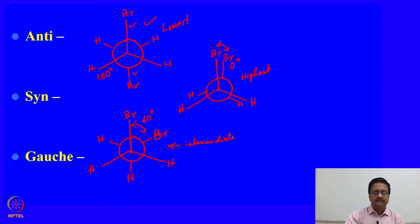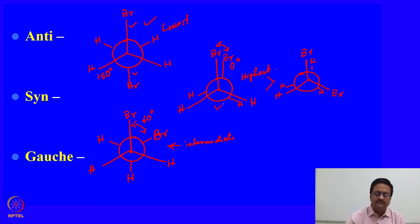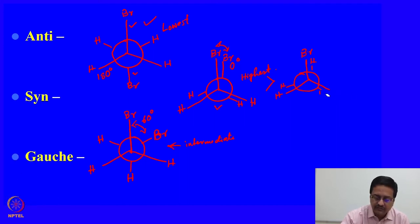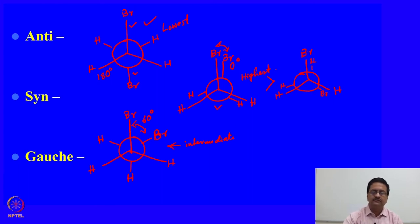There is another syn conformation possible for dibromoethane where bromine and hydrogen are eclipsed instead of the two bromines being eclipsed. This syn conformation has slightly lower energy compared to the fully eclipsed syn conformation, because the bromines are farther apart — there is no steric strain present, only torsional strain.